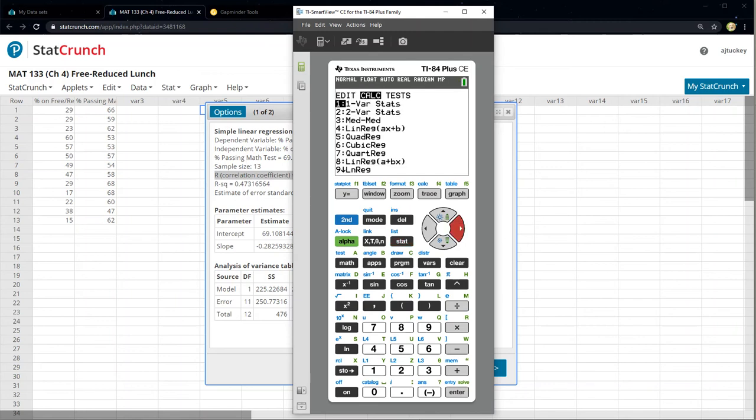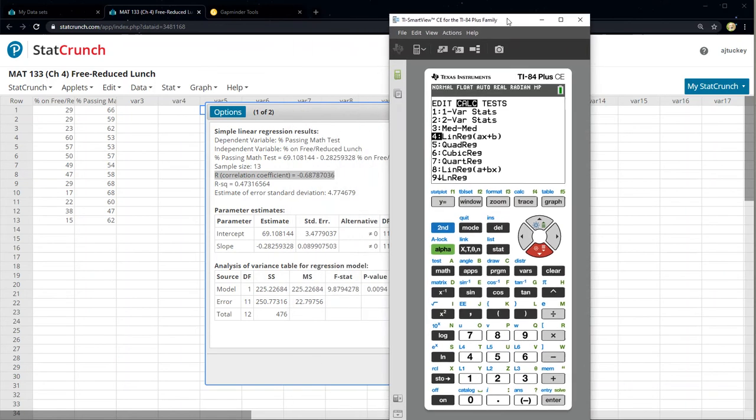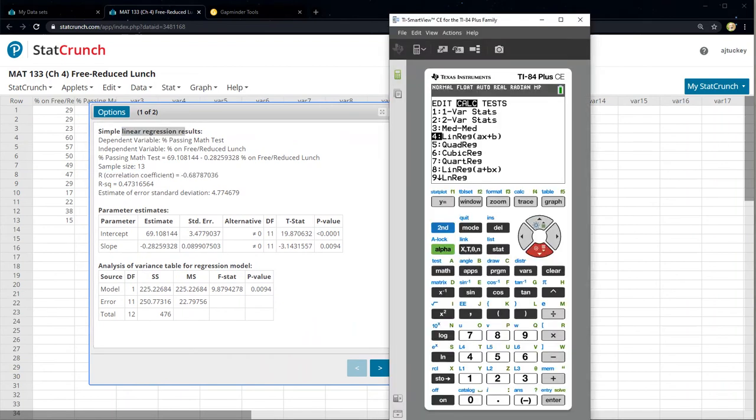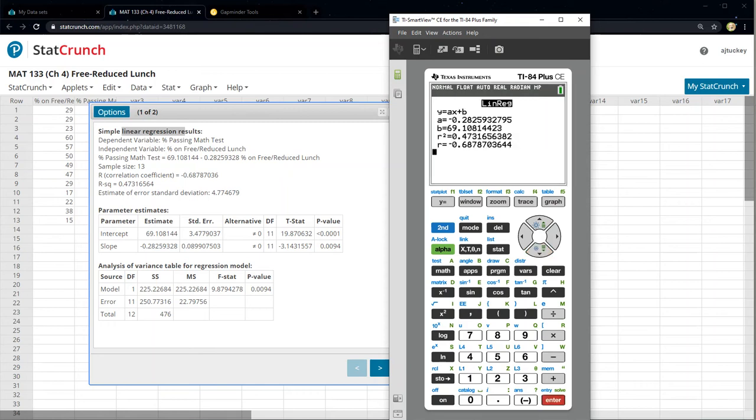then you go back to Stat to Calculate, and you pick number 4. It's linear regression. See how it says in the StatCrunch output Simple linear regression? That's what we're doing, linear regression. So if I click number 4, linear regression, it wants to know what the x and the y are as well. So my x list was in L1, my y list was L2. So this is all good. No frequency list. We only use frequency list in section 3.3 and section 6.1, and that's it. And there it is, the bottom number. R equals negative .6878, just like StatCrunch came up with.